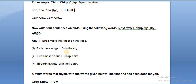Birds have wings to fly in the sky — here we have used fly, sky, and wings, three words together in one sentence. If you want, you can make three different sentences using each word. Next: birds make a sound — chirp chirp. They are making different kinds of sounds. Then: birds drink water with their beak.